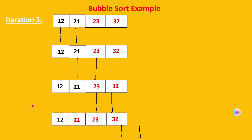In iteration 3, again make i point to position 0 and j to position 1. Compare: is j less than i? No, keep it as is, increment i and j. i reaches position 1 and j reaches position 2. We already know 23 is at its place, so comparing j and i again: j is not less than i, keep it as is. Increment again: i at position 2, j at position 3. These elements are already sorted — 32 is greater than 23, so no change. At the end of iteration 3, the element 21 also gets its correct place. Now 21, 23, and 32 are all sorted.